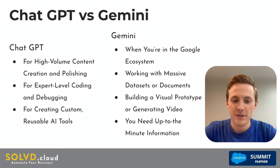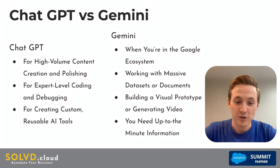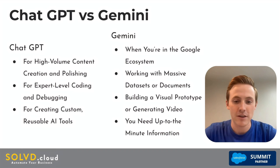For the differences between ChatGPT and Gemini: we recommend using ChatGPT when you're working with content creation and really polishing content to get exactly what you're looking for, as well as expert-level coding, debugging, and creating custom AI tools. When using Gemini, it's especially beneficial within Google's workspace ecosystem, and it's very handy with massive data sets and documents. Gemini is also especially good with visual prototypes, generating images and videos, and providing up-to-date information. We recommend using whichever Canvas tool best fits your business's needs.